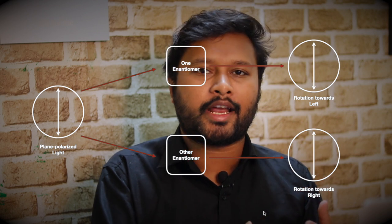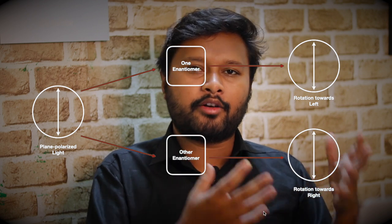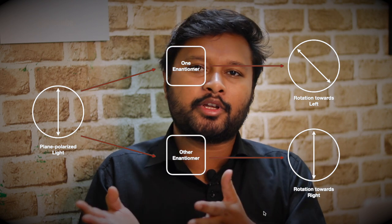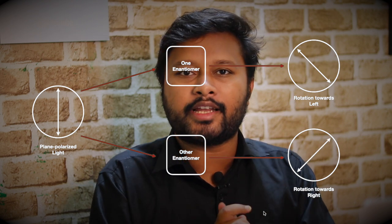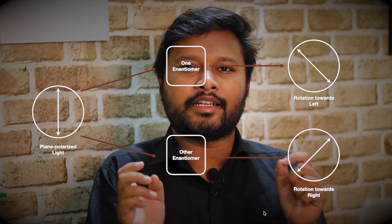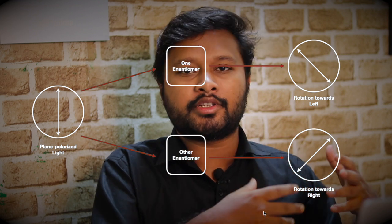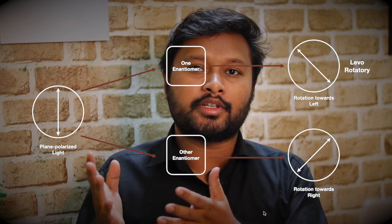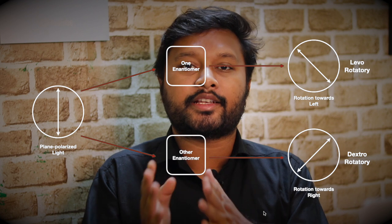All the enantiomers look physically similar — the molecular formula and all other properties are similar for both of them. The difference is in how they interact with light. One enantiomer is going to interact with plane polarized light and turn it to the left side, whereas the other enantiomer is going to turn that plane polarized light to the right side. The one which turns the light towards the left side is called levorotatory, whereas the one which turns it to the right side is called dextrorotatory.